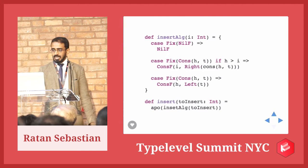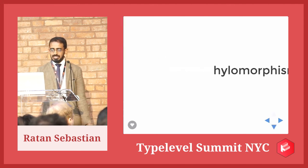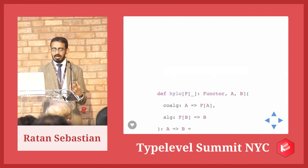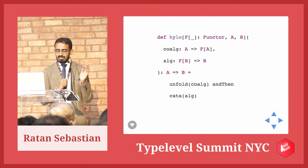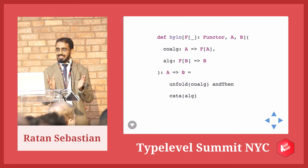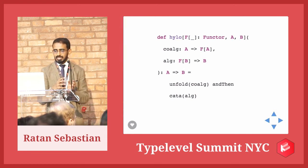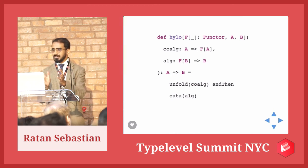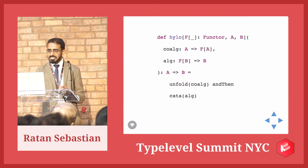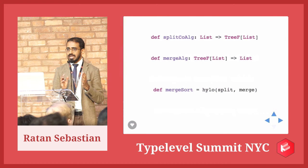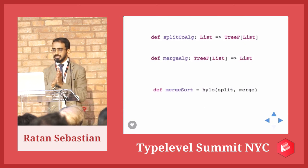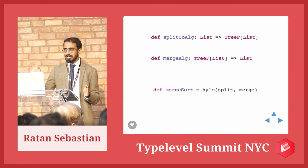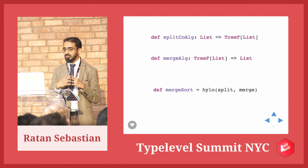The last recursion scheme I'll cover is hilomorphism, which is a combination of an anamorphism and a catamorphism — unfold and fold. It takes an initial value A, produces a recursive data structure Fix F using the co-algebra, and then the catamorphism using the algebra F B to B consumes that recursive data structure and produces a single value B. You're generating an intermediate data structure and then consuming it. A good example is merge sort: take a list and explode it into a tree of sublists, then consume that tree and put the sublists in the right order. If you define a co-algebra from list to TreeF of list and a merge algebra from TreeF of list to list, you can put them together using a hilomorphism and you've got merge sort.